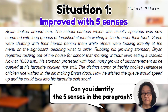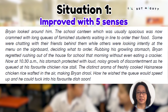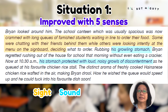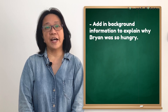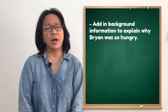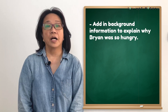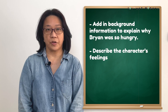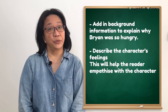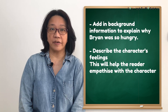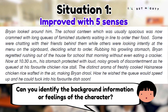Can you identify the five senses in the example above? Did you notice the expressions of sight, sound and smell in the improved version? Notice that other than the five senses, I have actually added in background information to explain why Brian was so hungry. To wrap up the descriptive paragraph, I also describe the character's feelings. Doing this will help the reader empathise with the main character. Take a look at the improved paragraph and see if you can identify the background information or feelings of the main character.